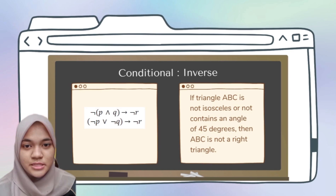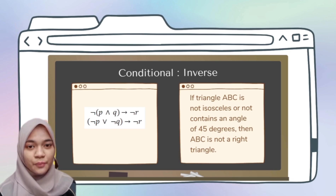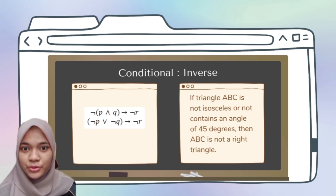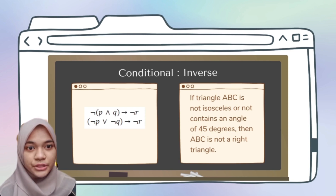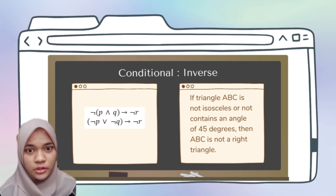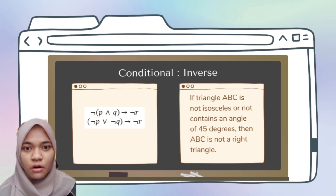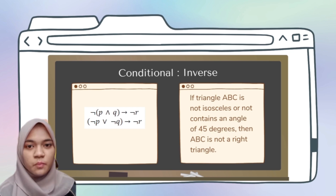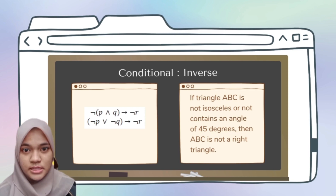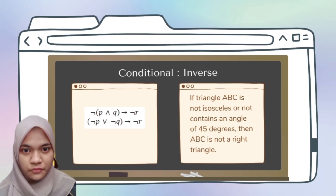The next conditional is inverse. For the inverse, use the original statement but negate both the hypothesis and the conclusion. It becomes ¬(P ∧ Q) → ¬R. Don't forget to expand ¬(P ∧ Q) using De Morgan's law. So the answer becomes (¬P ∨ ¬Q) → ¬R. In sentence form: 'If triangle ABC is not isosceles or does not contain an angle of 45 degrees, then ABC is not a right triangle.'